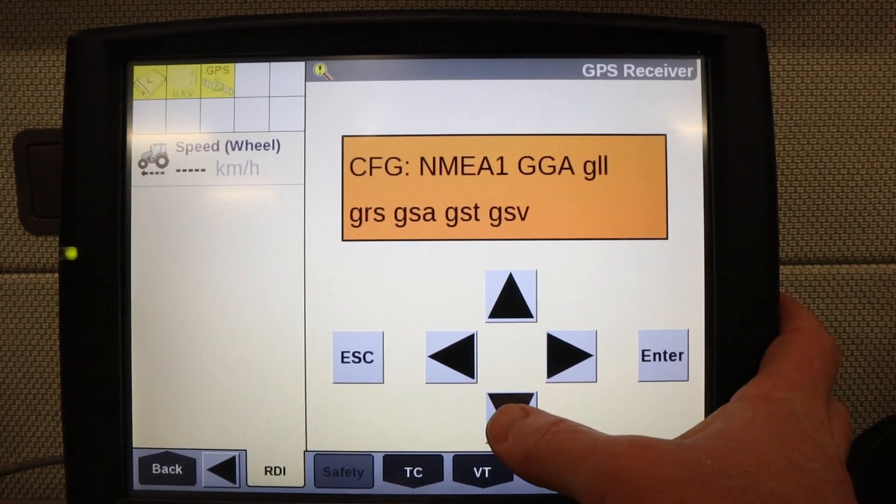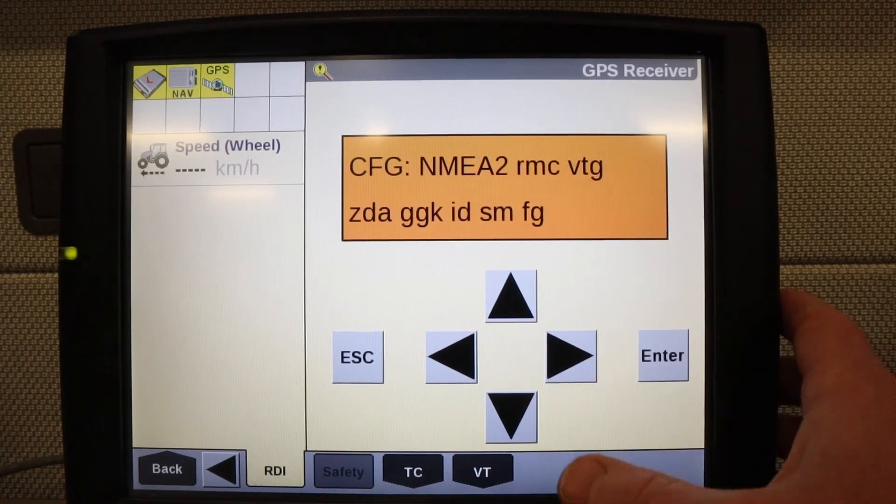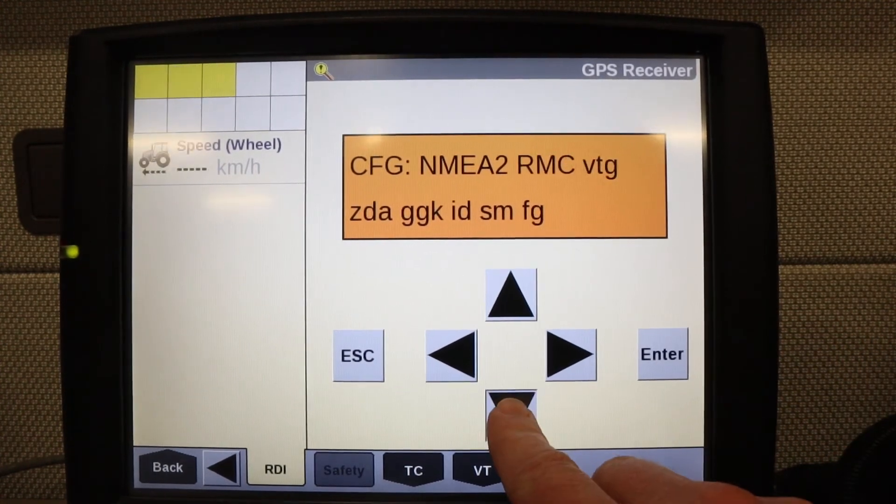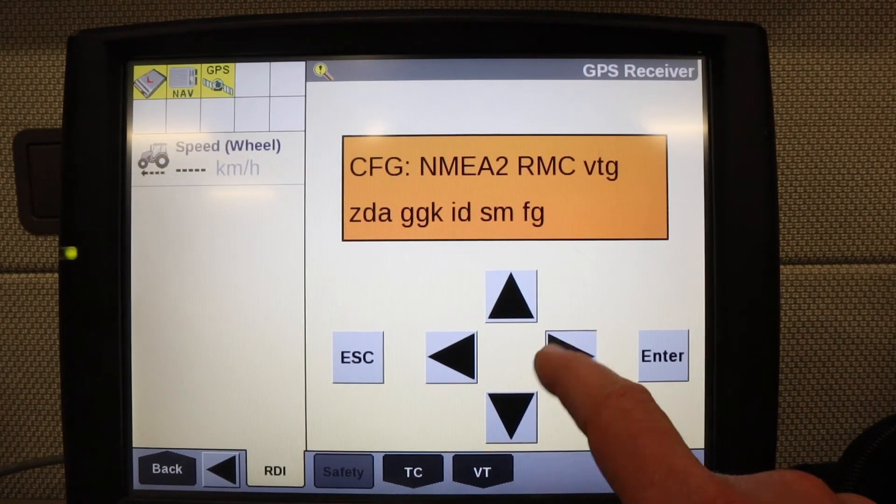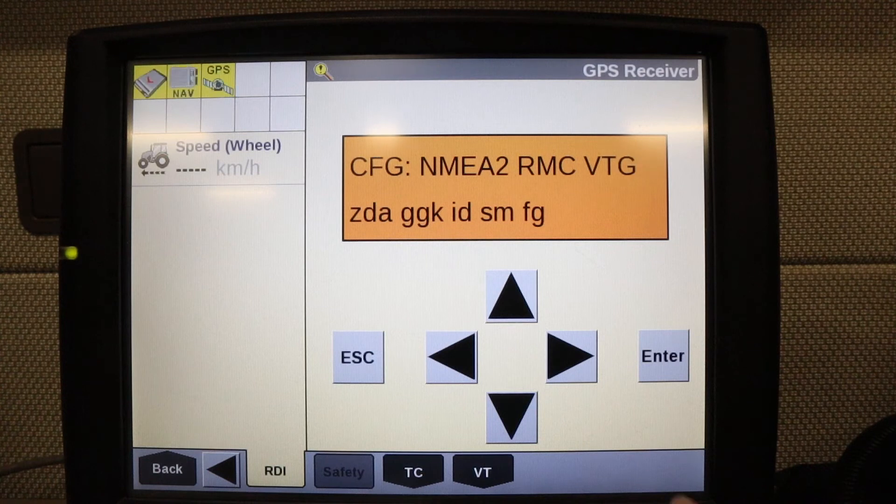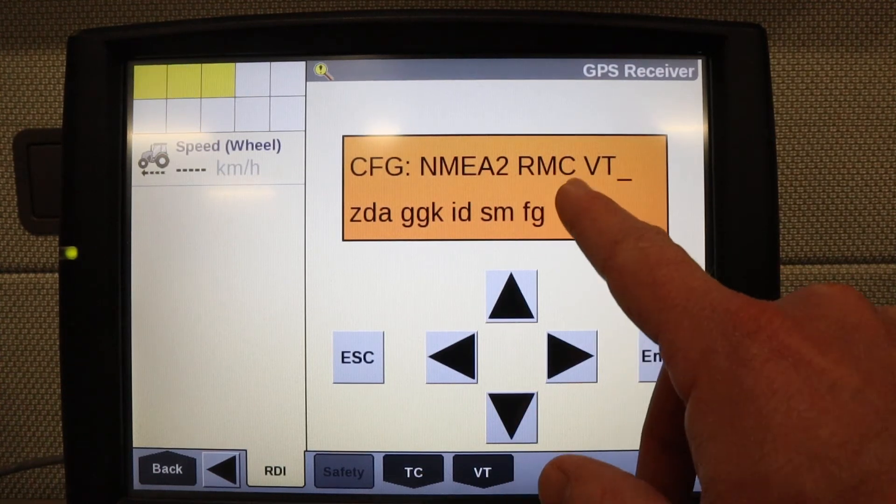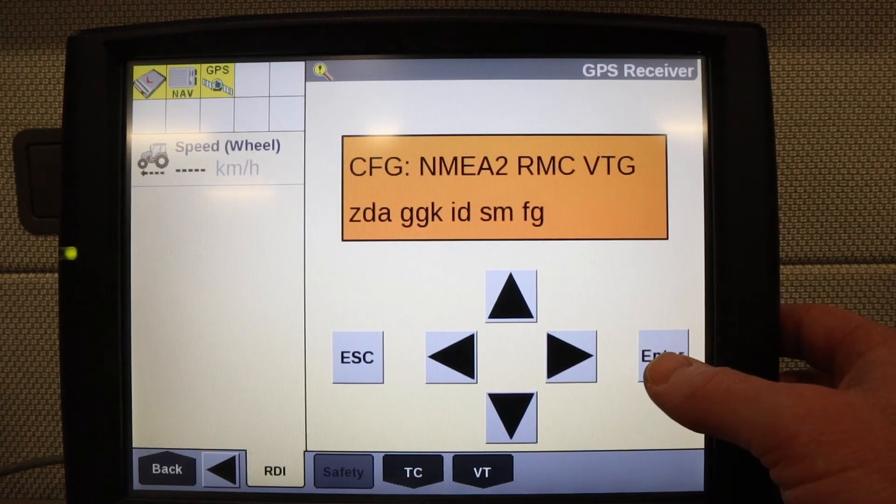Now I need the down arrow to get to the NEMA 2 screen. Right arrow again to get a cursor, and the down arrow to change the RMC to capitals. Right arrow once, then down arrow again to change VTG to capitals. On this screen, all I need is the RMC and the VTG as capital letters. I'll press enter.